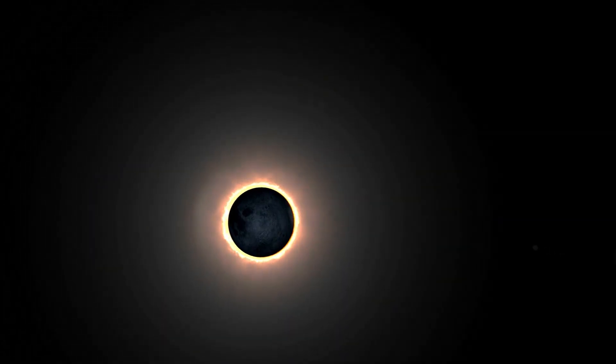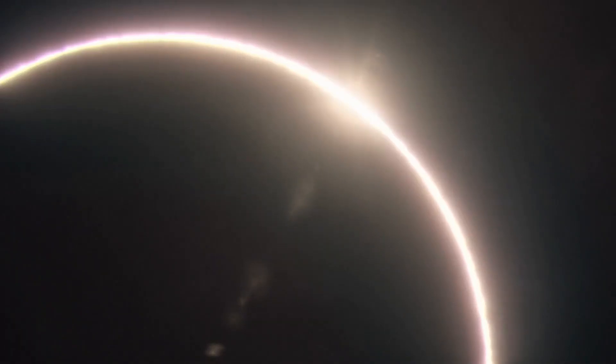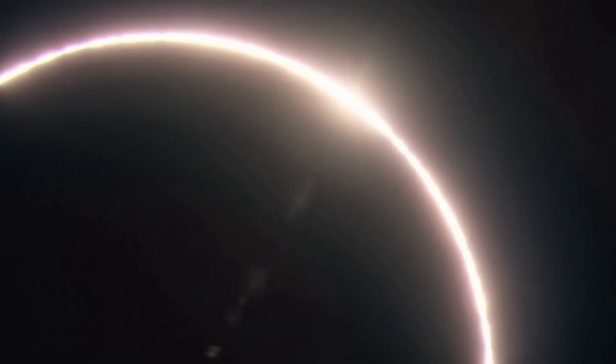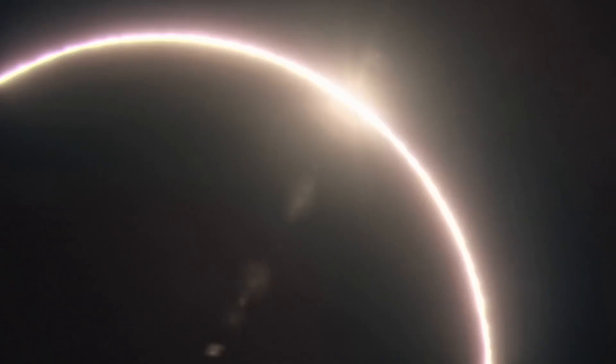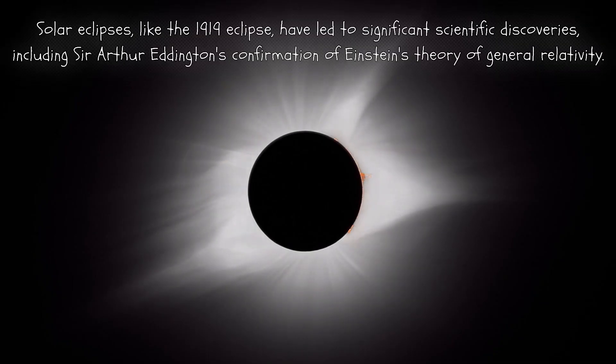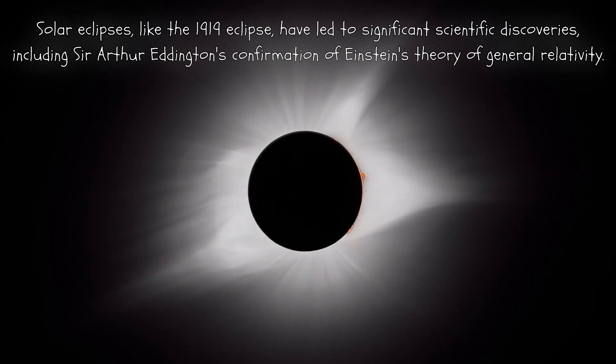Solar eclipses offer invaluable opportunities for scientific exploration, especially in solar physics. During a total solar eclipse, the sun's corona — the outermost layer of its atmosphere — becomes visible, providing scientists with a rare opportunity to study its structure and dynamics. Additionally, solar eclipses have contributed to significant scientific discoveries, such as Sir Arthur Eddington's confirmation of Einstein's theory of general relativity during the 1919 eclipse.